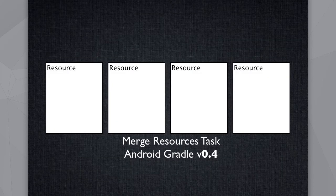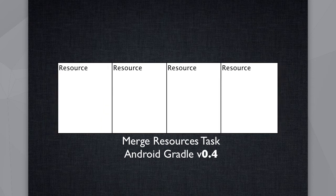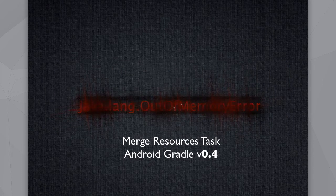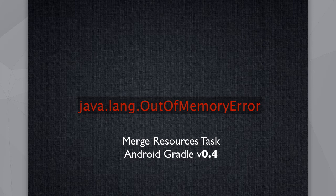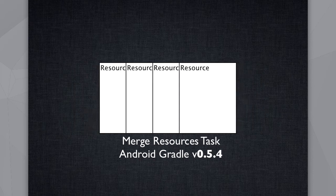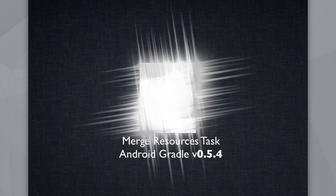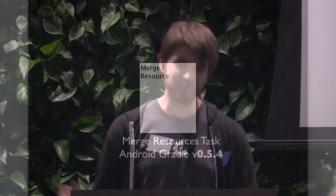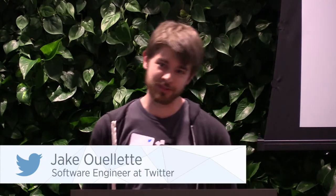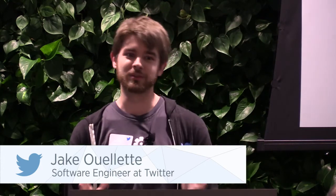Here's an example of something we ran into: there's a merge resources task — when you have different flavors, they merge down into one flavor. In version 0.4, this only happened when using the Crashlytics plugin, which was infuriating for our users. It turned out to be a heap space issue. In version 0.5.4, which isn't even the latest version, it now works with no more issues of that nature. This was actually happening for a specific user because their project was so large.